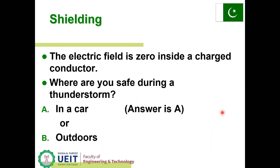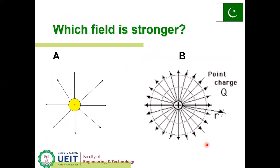Where are you safe during driving a car in a thunderstorm — in the car or outside? The answer is in the car, because the car's metal shielding protects you. Which field is stronger, A or B? Field B is stronger because the number of electric field lines in B is greater than in A.